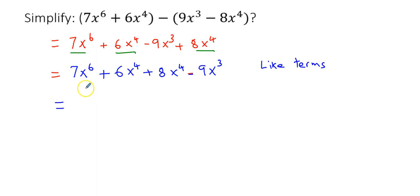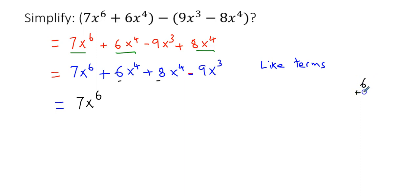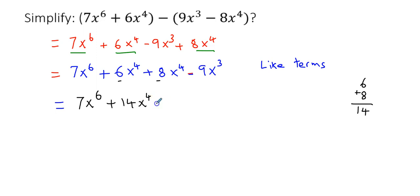That equals 7x to the power of 6 — no change needed there. The second and third terms are like terms, so combine them: 6 plus 8 gives you 14, so 14x to the power of 4. Please don't do anything to the exponents — leave it as 14x to the power of 4. Then the last term is minus 9x cubed.